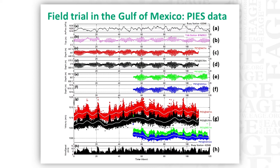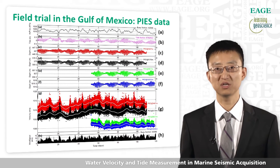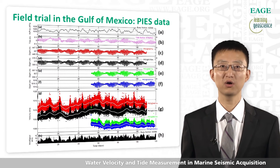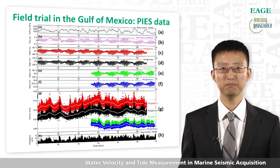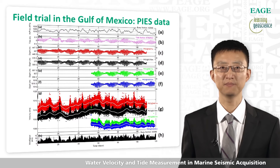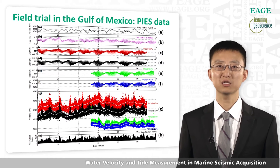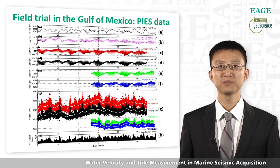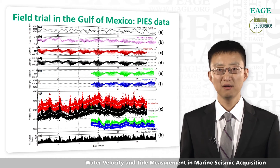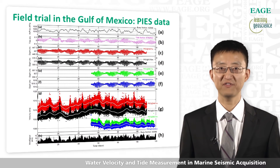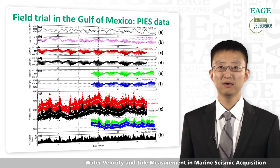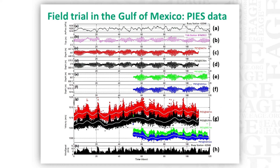We also observed some interesting features in this plot. For example, there are spikes above the normal water velocities from time to time. To explain this, we checked all the weather data from nearby buoy stations, and we found this feature closely correlates with the sea level wind speed as shown in the bottom plot. Every time the wind speed goes above 10 meters per second, there is a spike in the water velocity plot. One explanation is that strong wind generates a disrupted layer under the sea surface, like bubbles. Part of the acoustic waves are scattered or reflected before they reach the sea surface, so the travel time is reduced and the apparent velocity increases. This could also happen to seismic waves and potentially impact 4D data quality.